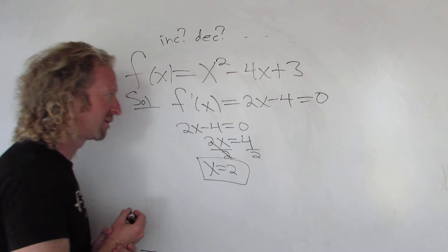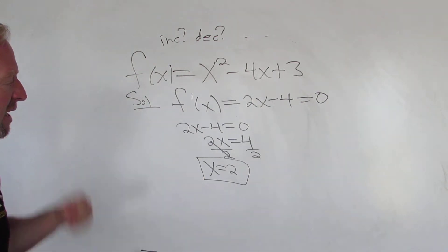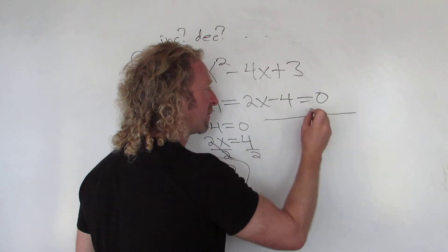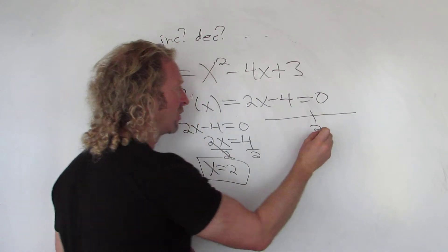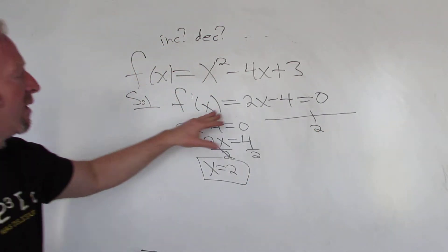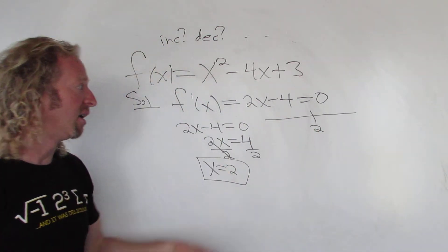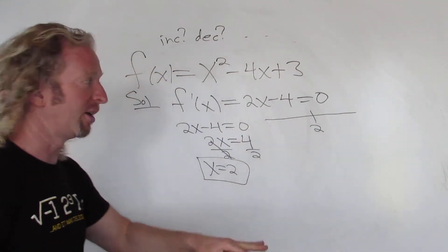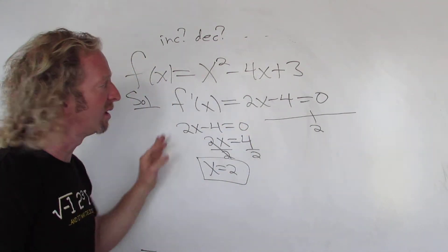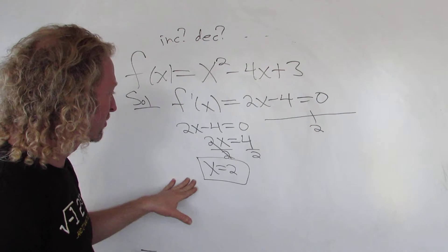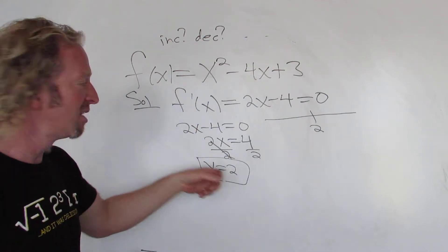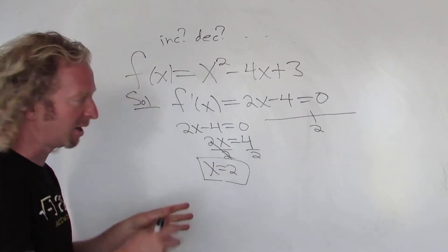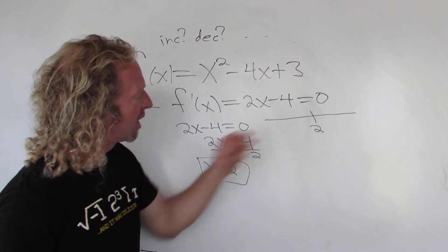So you take this number and put it on a number line. Step 1: take the derivative, look to see if it's undefined anywhere — even a vertical asymptote — make note of it. Then set it equal to zero and solve. Take all the answers from that process and put them on a number line. This is a point of interest — plot it on a number line.